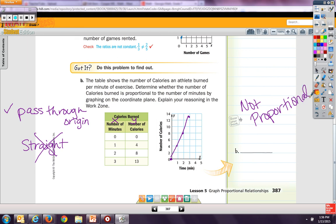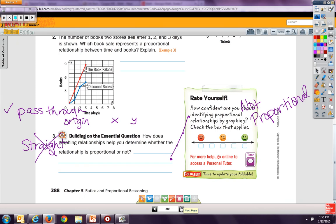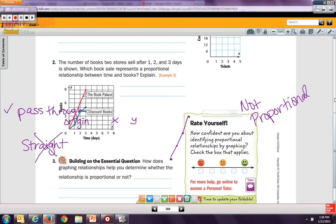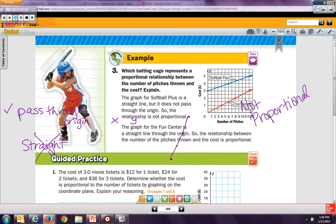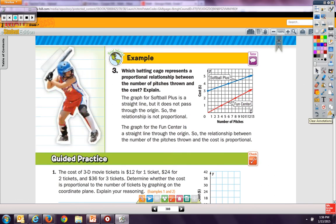Remember, straight line passes through the origin. And then you will have to do the guided practice on page 388. And you will do those three questions. I will talk through this last example for you. And it says, which batting cage represents a proportional relationship between the number of pitches and the cost? Now, the graph of softball plus is a straight line, but it does not pass through the origin. So this is what we're saying. We have two things, two criteria it must meet. Straight line and through the origin.